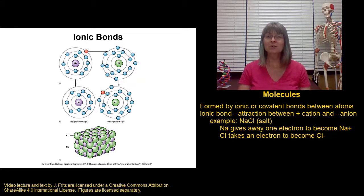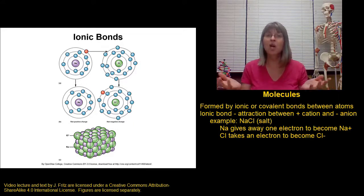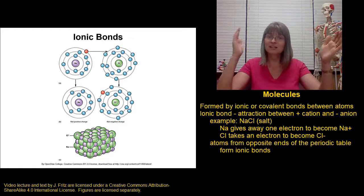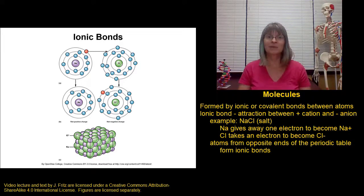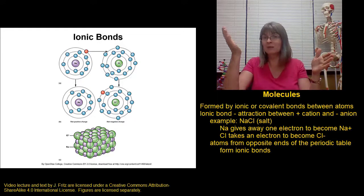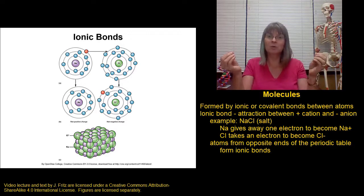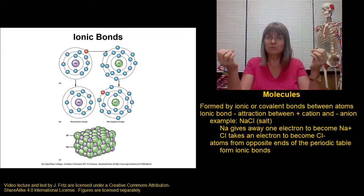Since ionic bonds form between positively charged ions and negatively charged ions, we often see ionic bonds forming between atoms that come from opposite ends of the periodic table. When we see an atom from the left side bonding with an atom from the right side, that's very likely to be an ionic bond where one atom gave up an electron, one took an electron, and those positive and negative ions were attracted to each other.